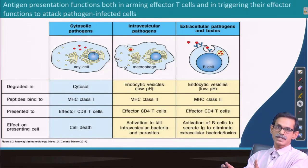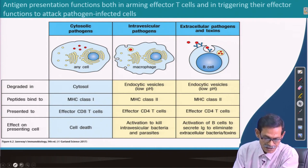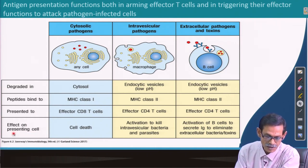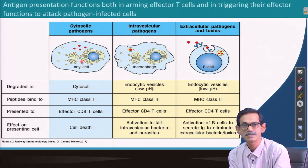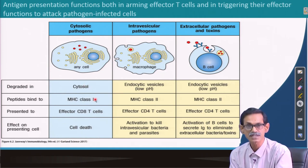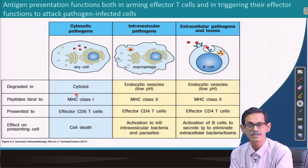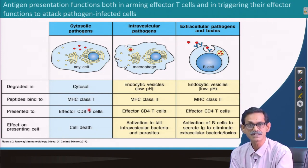Just to remind you again: for cytosolic pathogens — mostly viruses, which grow inside cells — MHC class 1 is the one taking care of processing and presentation. The target cells of MHC 1 are CD8 T cells, and the result of that interaction is cell death.